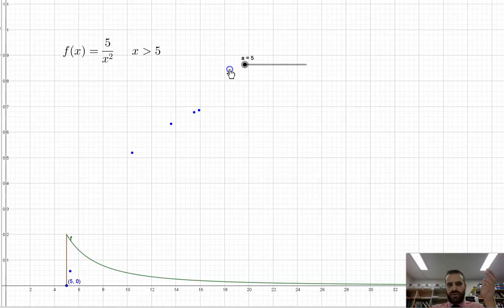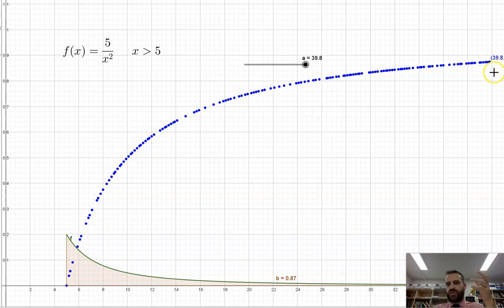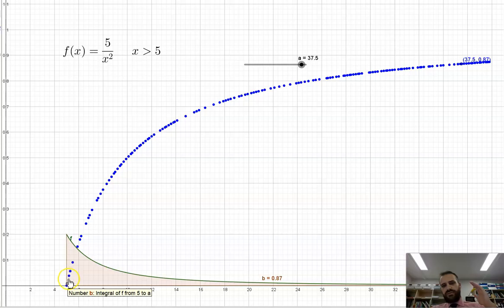It goes on and on forever and ever. And it'll get closer and closer to 1, but never quite get there because this is asymptotic. But you can see that at, say, 37.5, when x is equal to 37.5, the probability being between 5 and 37.5 is 0.87. What I have created is the cumulative probability distribution function.